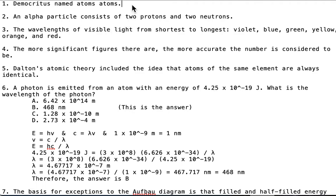Chemistry: Democritus named atoms 'atoms.' An alpha particle consists of two protons and two neutrons. The wavelengths of visible light from shortest to longest are violet, blue, green, yellow, orange, and red. The more significant figures there are, the more accurate the number is considered to be. Dalton's atomic theory included the idea that atoms of the same element are always identical.